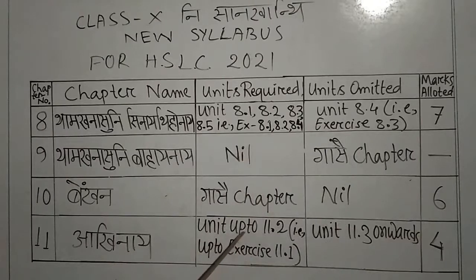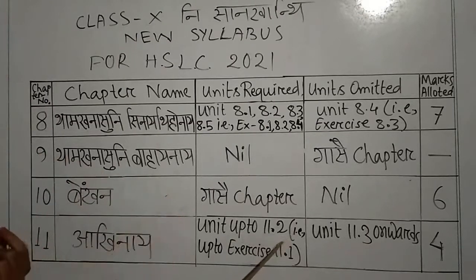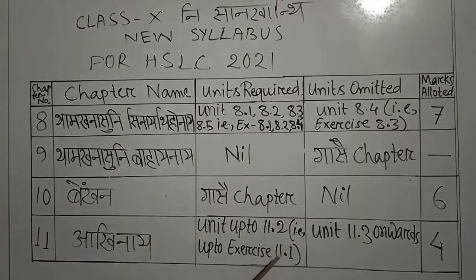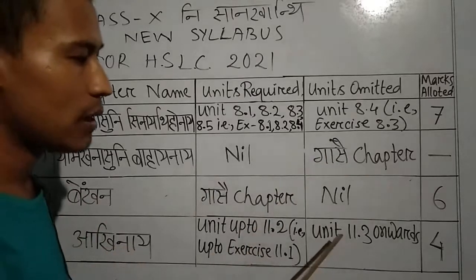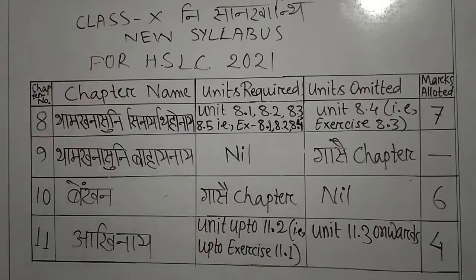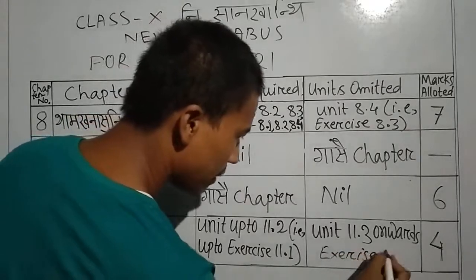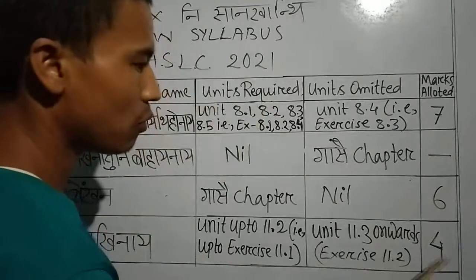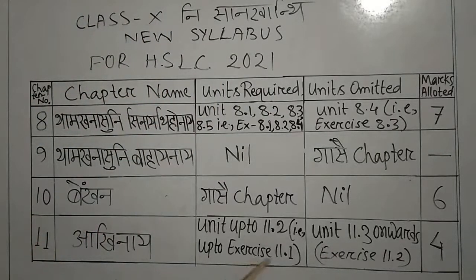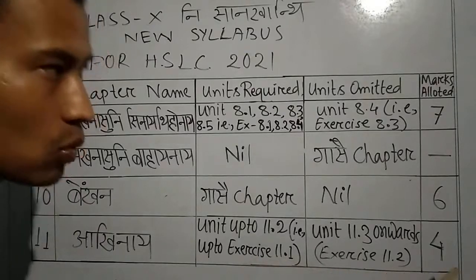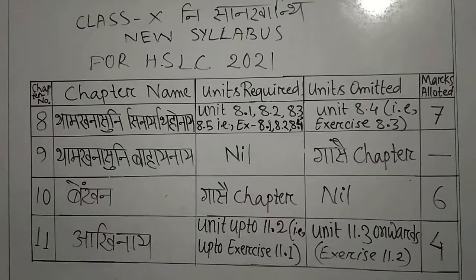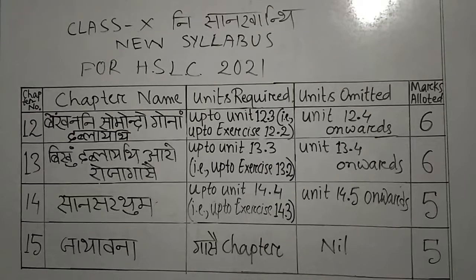Units up to 11.2, unit number 11 to unit. After exercise 11.1, 11.1 is 11.2, and 11.2 is 11.3 onwards. The exercise is 11.1 and 11.2. The number of times are 11.1 and 11.2, so we are 11.1.